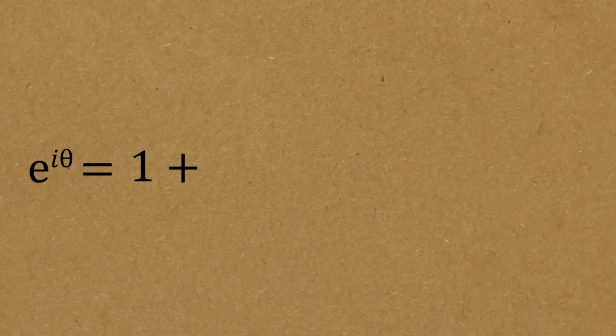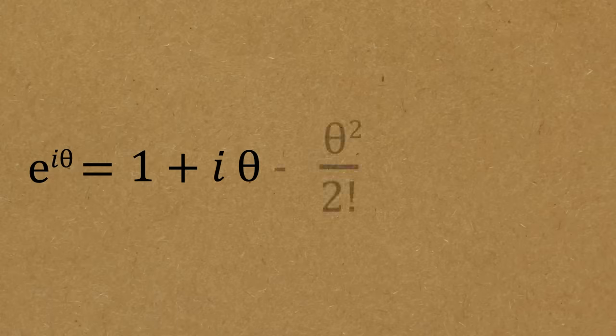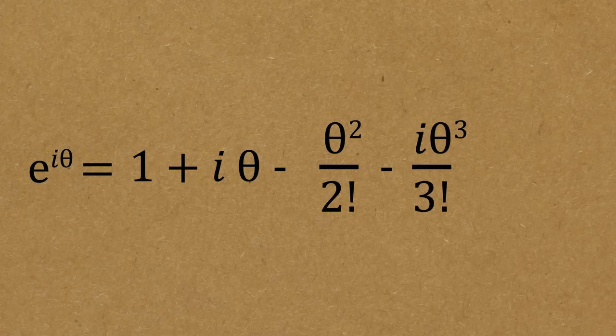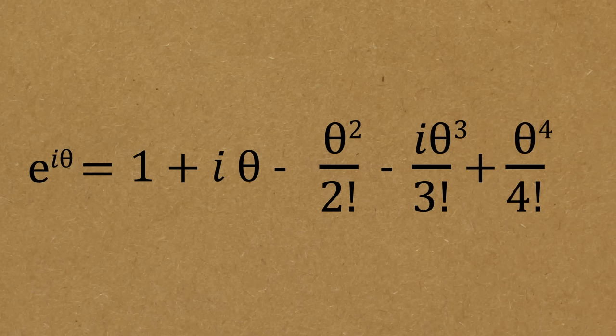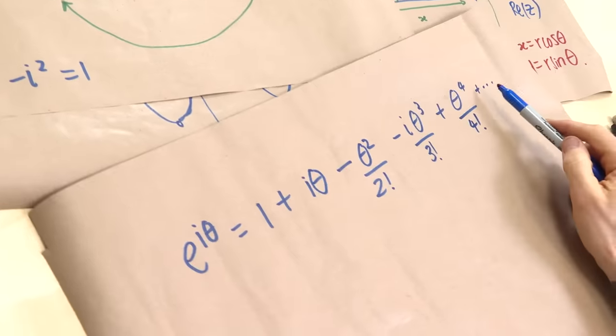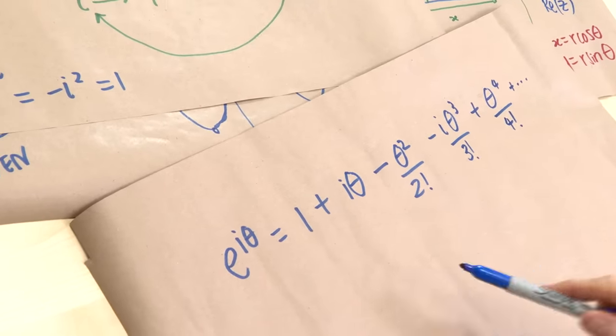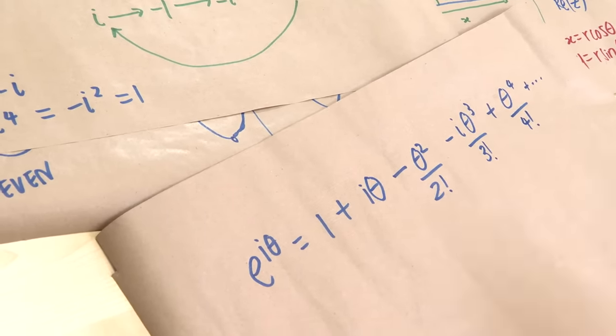Plugging this cycle into our expansion: e to the i·theta equals 1 plus i·theta plus i squared·theta squared over 2 factorial — but i squared is minus 1, so that's minus theta squared over 2 factorial — then i cubed gives minus i, so minus i·theta cubed over 3 factorial, then the 4th power is 1, giving plus theta to the 4th over 4 factorial. The pattern continues: i·theta to the 5 over 5 factorial, then minus, then minus i, then 1, repeating.